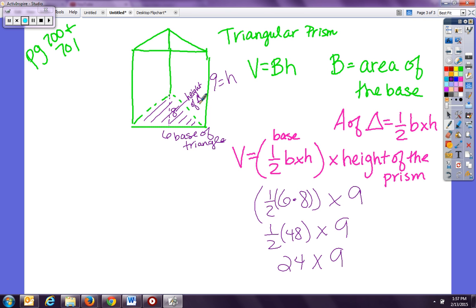So once I multiply one half of six times eight, which is 48, one half of that is 24. 24 times nine is 216. Equals 216 units cubed.